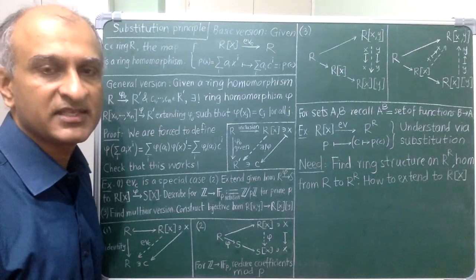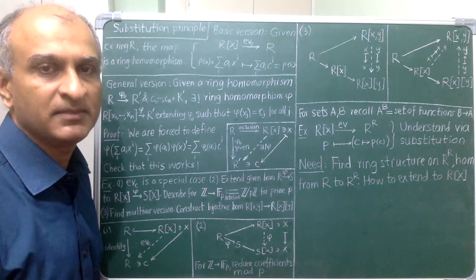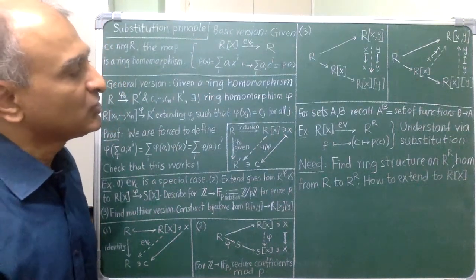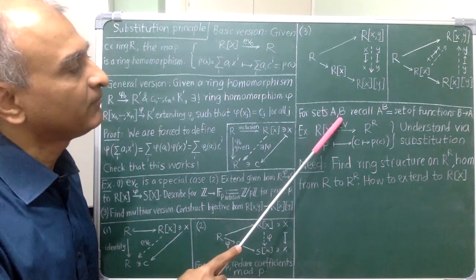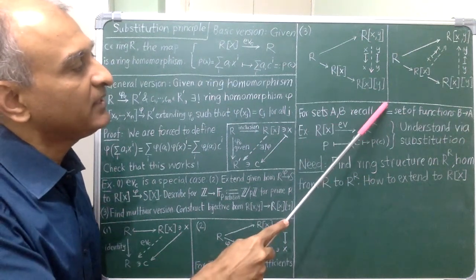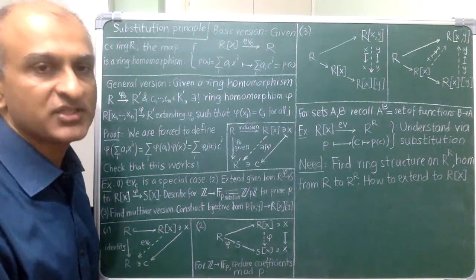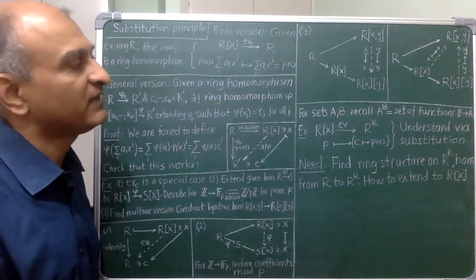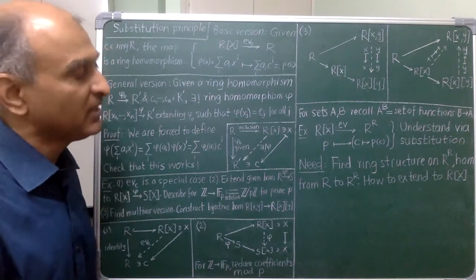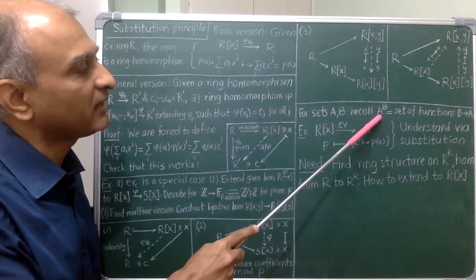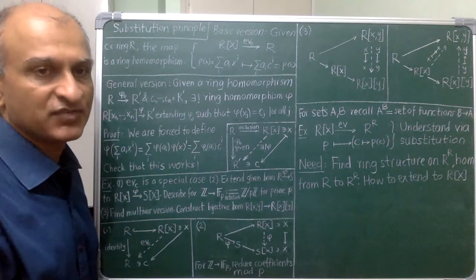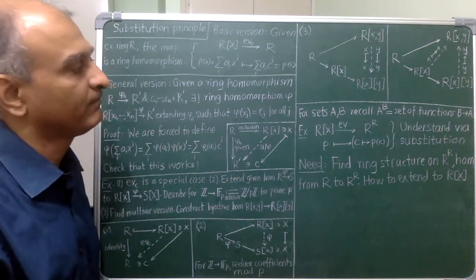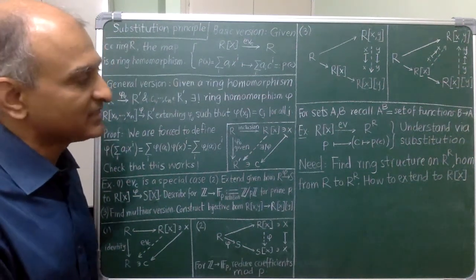Before seeing the last example of the substitution principle, let me recall some notation. For sets A and B, A to the B denotes the set of all functions from B to A. The reason for this notation is that when A and B are finite sets, the cardinality of A to the cardinality of B counts the number of such functions by simple counting.